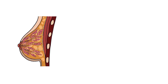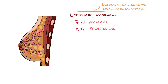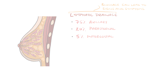Commonly, the presentation of breast cancer is linked to disturbance in the lymphatic drainage, where lymph from breast tissue drains into the axillary lymph nodes, the parasternal nodes, and the intercostal nodes, with 75% going to the axillary lymph nodes.